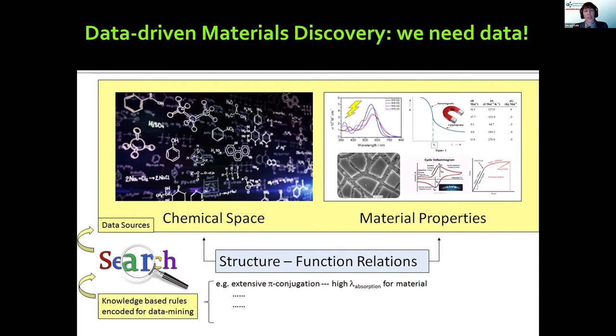Now we don't have the entire universe of all possible chemicals and their cognate material properties, and yet to a first-order approximation we have a representative set of that, albeit in a highly fragmented form — and that fragmented form is the scientific literature.